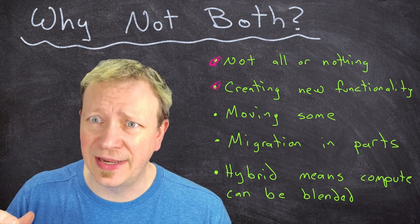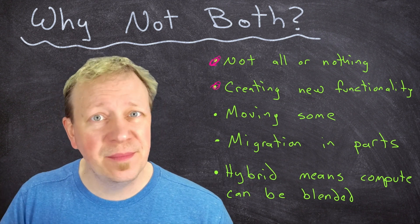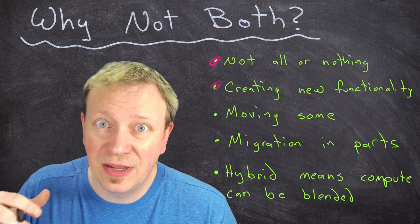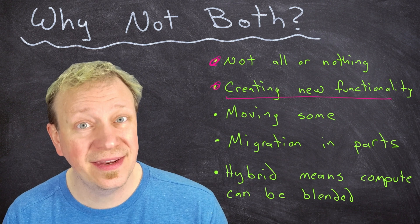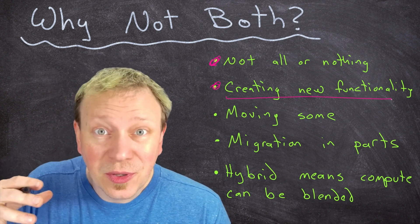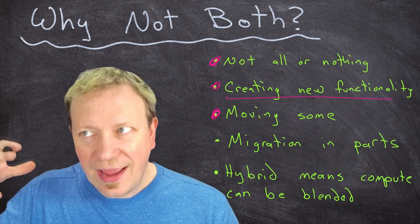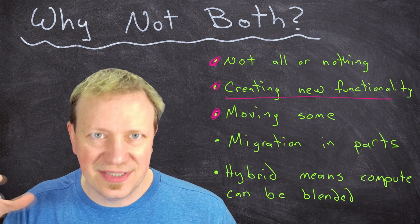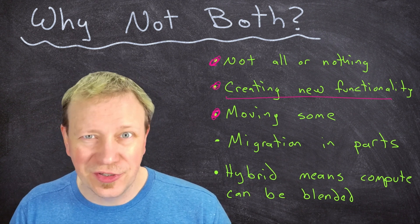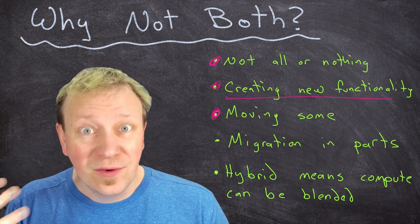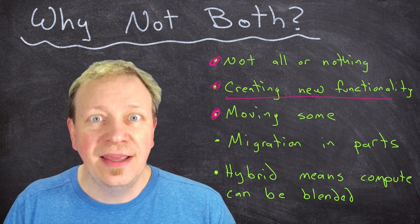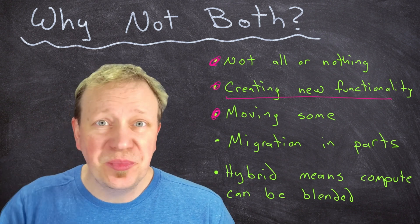Let's say everything you're doing on-prem is working perfectly fine, but you don't want to buy new servers to implement a feature you've been wanting to add. Instead of that capital expenditure of buying servers for on-prem, keep your existing app working and have that new functionality rely on the cloud. You end up with a hybrid situation - some locally and some in the cloud. You can also slowly migrate pieces of your application into the cloud incrementally until you're more and more cloud native.